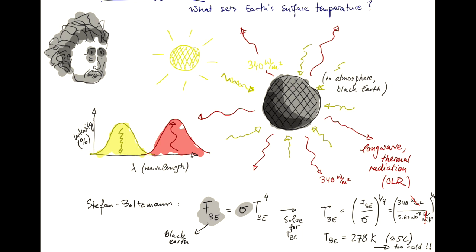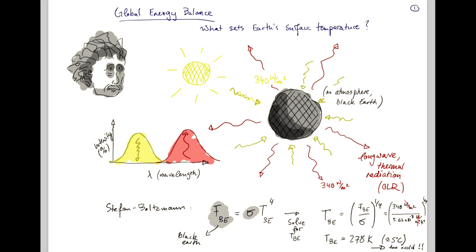And now the question, of course, is why is the Earth's surface temperature warmer than this, even though we know that the surface of the Earth is not black, so we would actually assume that we absorb less energy. So, let's do that next.